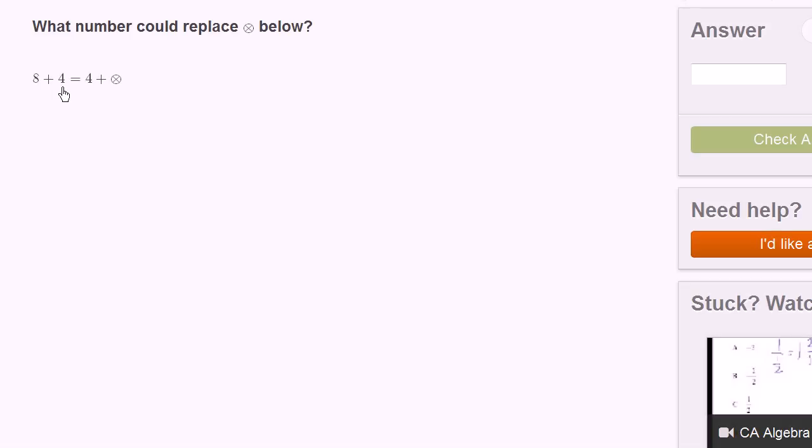That's the commutative law of addition, which is just a very fancy way of saying that 8 plus 4 is the same thing as 4 plus 8. It doesn't matter which number comes before the addition sign and which one comes after. So 8 plus 4 is the same thing as 4 plus 8. This little thing could be replaced by the number 8.